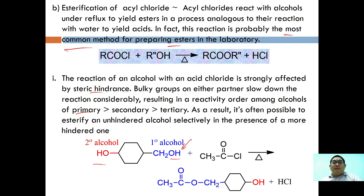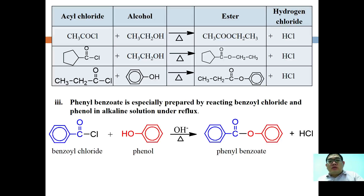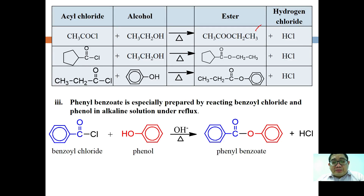Acyl chloride will preferably react with a primary alcohol rather than a secondary alcohol to form the ester. Examples: cyclopentyl acyl chloride reacted with ethanol forms the corresponding ester; propanoyl chloride with an alcohol forms its ester. Phenyl benzoate is especially prepared by reacting benzoyl chloride and phenol in alkaline solution under reflux.